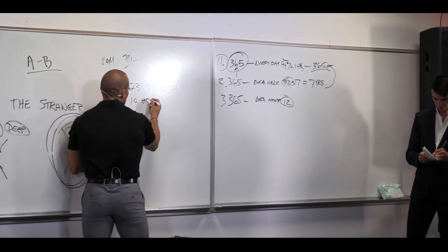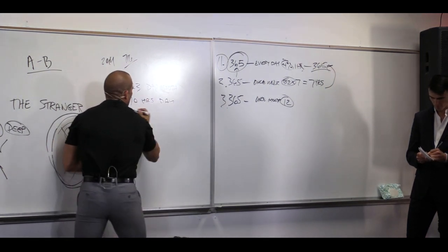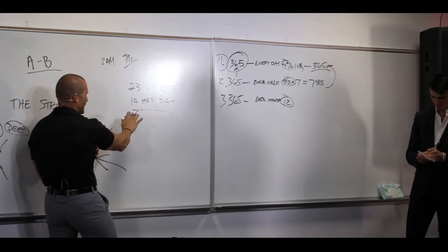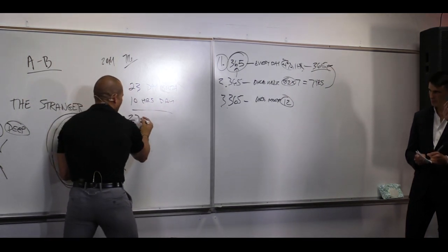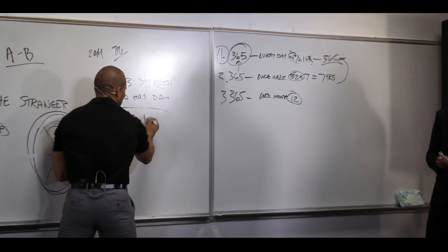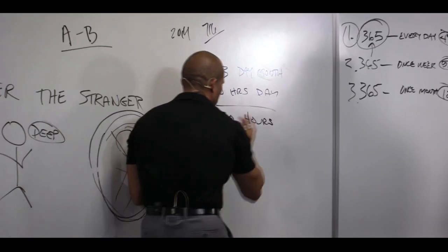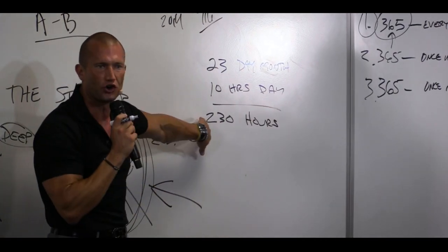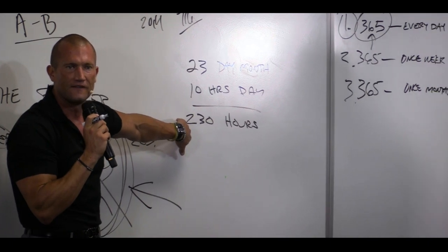Do me a favor. How many hours do you work a day? Write that down. If I'm working 23 days a month, 10 hours a day, your paper should look like this. Write down how many hours you're working total every month. This person, I'm working 230 hours. Does that make sense?